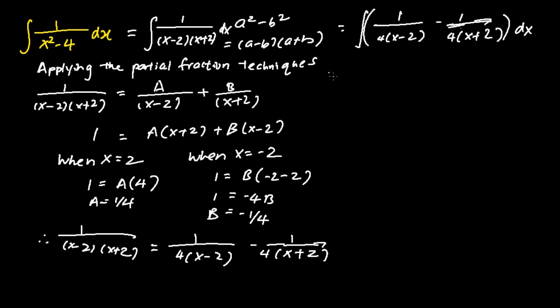The next step is to split this integral into two different integrals. The first integral is 1 quarter times the integral of 1 over (x minus 2) dx, and the second integral is the integral of 1 over (x plus 2) dx.